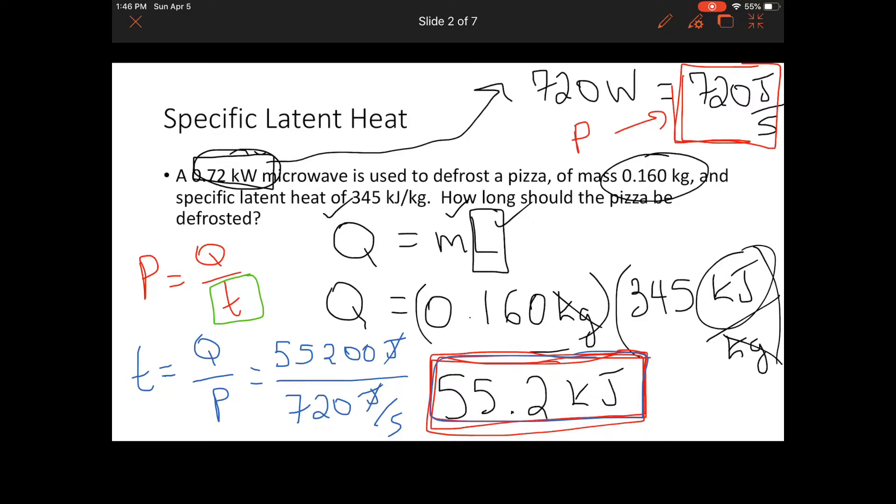Punch that into your calculator. 55,200 divided by 720. And you get roughly, I'm rounding because we're just going to go to the nearest second in this example. And I do get a value of 77 seconds.